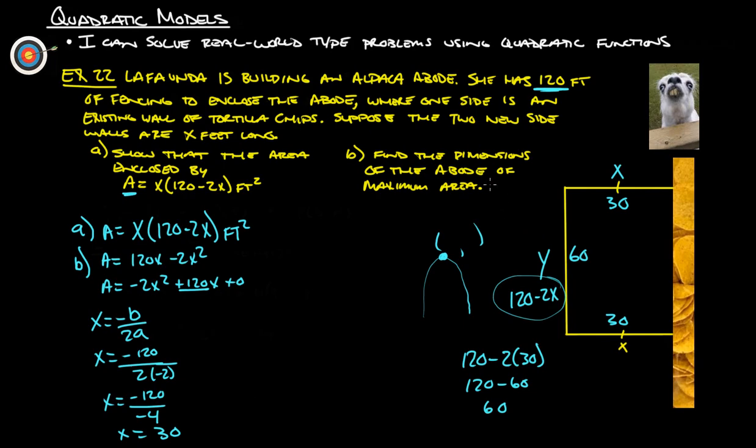Find the dimensions of the abode of maximum area. So that's going to be 30 by 60, 30 feet by 60 feet. And that's the abode of maximum area. All right. That's all we have for the second example of quadratic models. That is, indeed, the exciting conclusion of this video. If you have any further questions, please feel free to ask. Thanks.